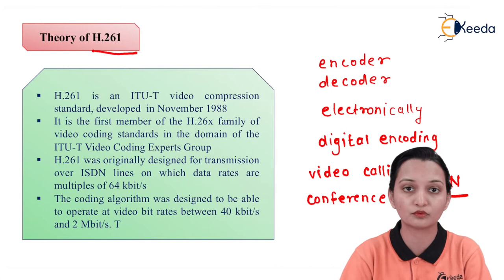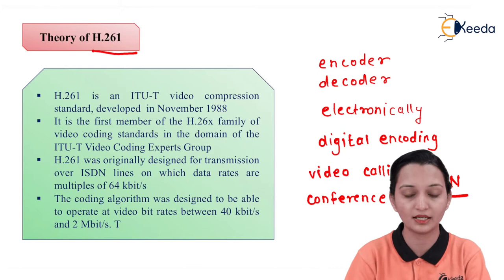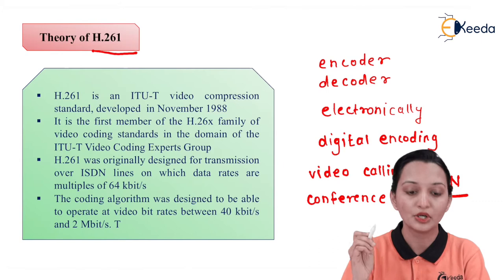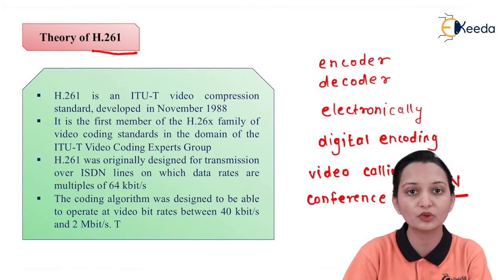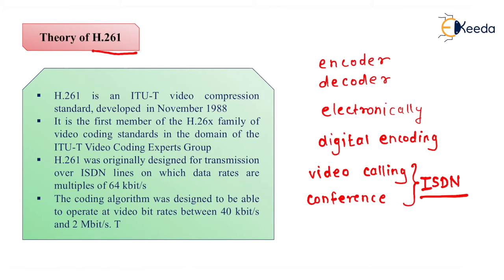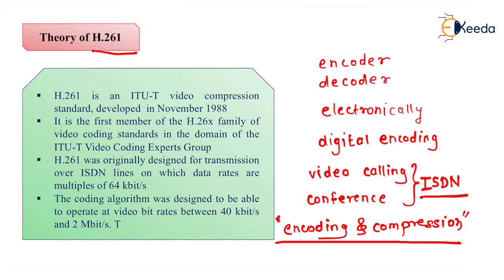H.261 was designed with the help of MPEG — Motion Picture Expert Group. The application of MPEG, especially MPEG-4, is to provide communication over electronic transmission. To fulfill that application, an encoder was designed because whenever we require to transmit data, we require to encode it as well as compress it. Encoding and compressing the data plays an important role in transmission.